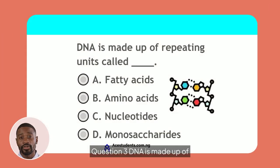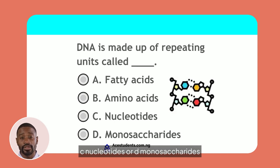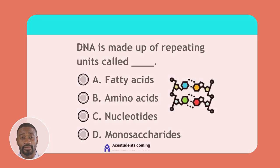Question 3. DNA is made up of repeating units called what? Is it A. Fatty acids, B. Amino acids, C. Nucleotides, or D. Monosaccharides? Reflect on the structure of DNA.